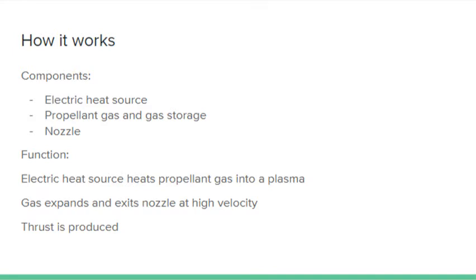Electrothermal rockets work by using an electric heat source, such as a microwave radiation generator, to heat the propellant gas into a plasma. Heating the propellant gas causes it to expand and start moving at a much higher velocity. The gas exits the rocket from the nozzle at high velocity, producing thrust.